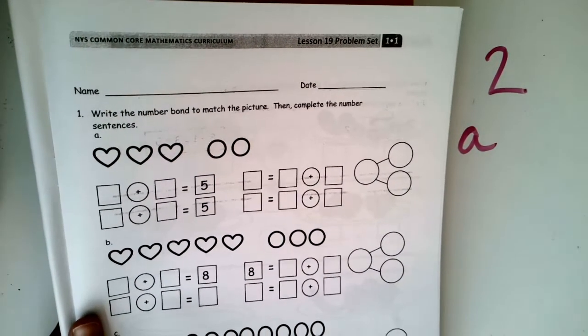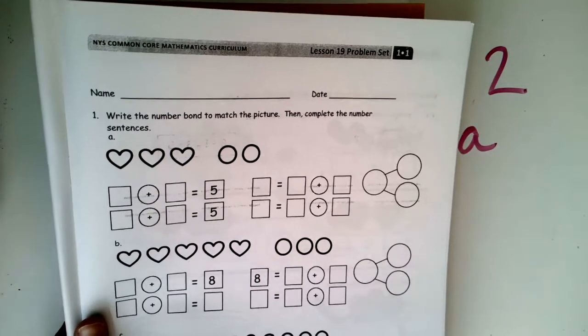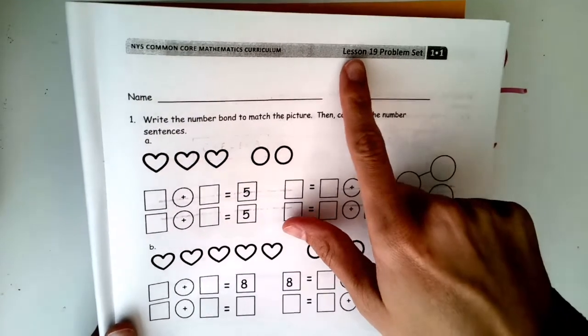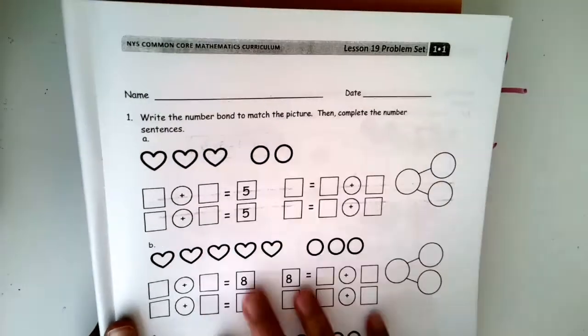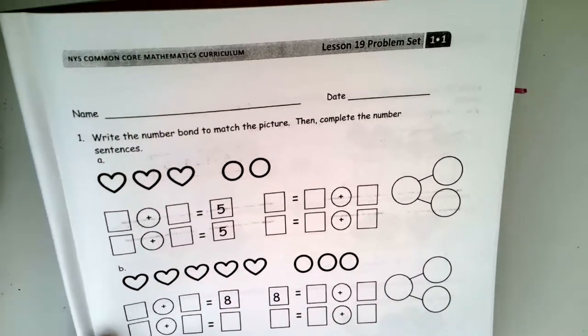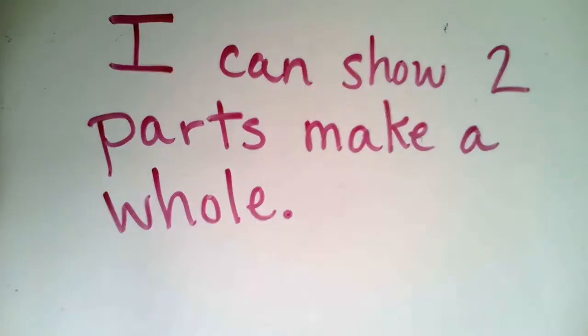We actually skipped the lesson so you're gonna have to pass some pages that will be blank and that's okay. Double check make sure you get your math book on the lesson 19 problem set page with the hearts and the circles. And then you'll just need something to write with. Let's get started!